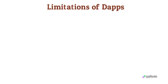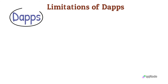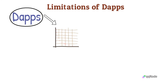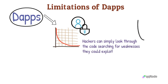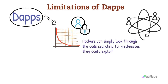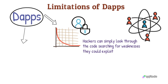Like with everything in life, dApps are not perfect and have their own drawbacks. The first drawback is that they are at risk of hacks. Since dApps are run on open-source code, anyone can simply look up the codebase of a particular dApp. Hackers can look through the code searching for weaknesses they could exploit. It's why there's been a series of hacks on dApps in recent times.